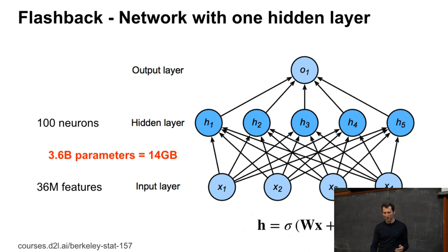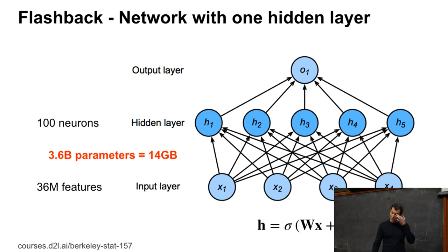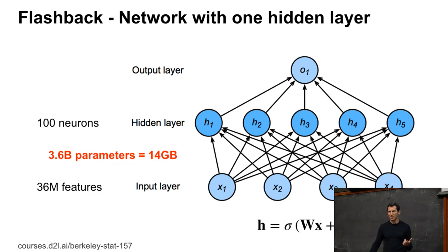Just to drive this point home: if I have this neural network with one hidden layer and a single output, then H is sigma of W times X plus B. So 3.6 billion parameters — that's around 14 gigabytes if I store it as 32-bit floating point numbers. If I have FP16, that's still 7 gigabytes, which is still more than your mid-range Turing GPU.